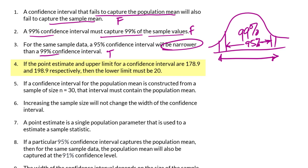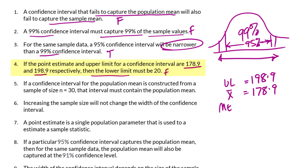Number 4: If a point estimate and upper limit for a confidence interval are 178.9 and 198.9 respectively, then the lower limit will be 20. That is false. If the upper limit is 198.9 and the point estimate X-bar is 178.9, then the margin of error is the difference between these two, which is 20. The lower limit is X-bar minus the margin of error, which is 178.9 minus 20, giving 158.9.